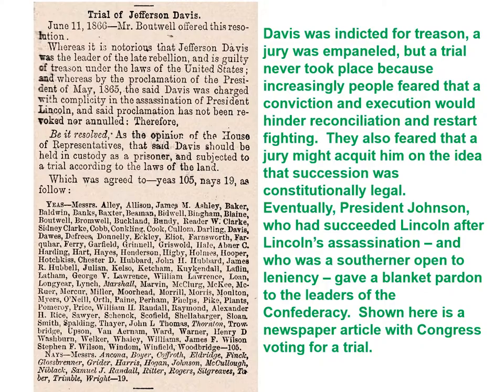Davis, meanwhile, was indicted for treason. A jury was impaneled, but a trial never took place, because increasingly people feared that a conviction and execution would hinder reconciliation and potentially restart the fighting. They also feared that a jury might acquit him on the grounds that secession was constitutionally legal, which would cause all sorts of problems. Eventually, President Andrew Johnson — who had succeeded Lincoln and was himself a southerner open to leniency toward the South — gave a blanket pardon to the leaders of the Confederacy.